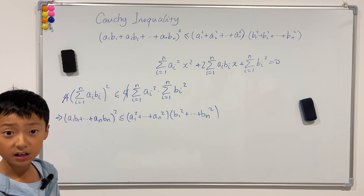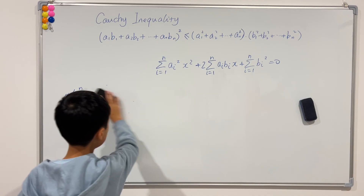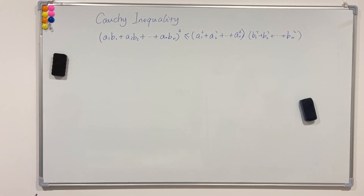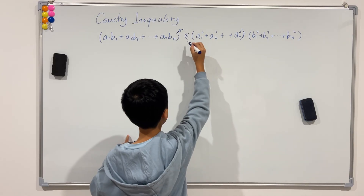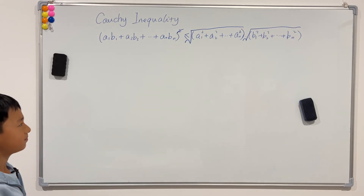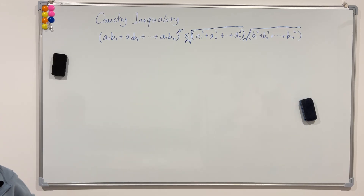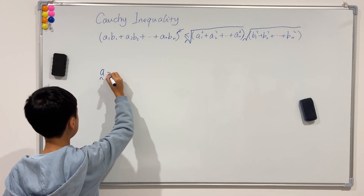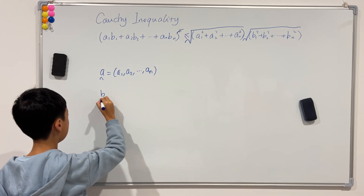Method 1 is okay in difficulty, but Method 2 is super easy — you just need about 10 seconds to prove the Cauchy inequality. Method 2 says: just take the square root of both sides. If we do that, the square on the left becomes a square root, and there's a square root on the right side too. If you look at the left-hand side, it reminds you of the dot product in vectors. Vector a is (a₁, a₂, ..., aₙ) and vector b is (b₁, b₂, ..., bₙ).